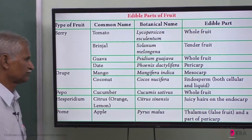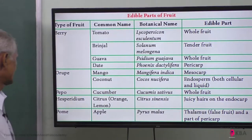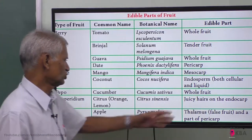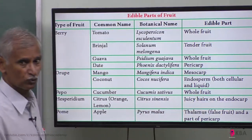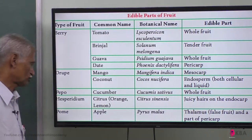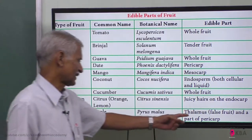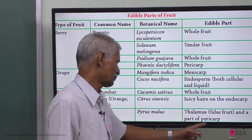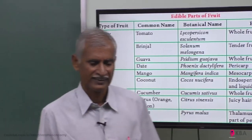For pepper and cucumber, the whole fruit is edible. For Hesperidium — the citrus/orange group — the juicy hairs are the edible part. For pome, that is apple, the thalamus is involved — it is a false fruit — and part of the pericarp is edible.